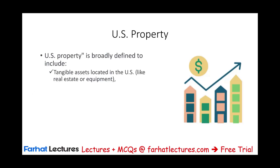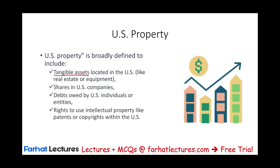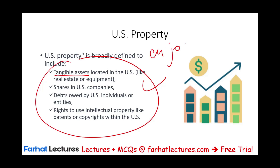What is U.S. property? U.S. property is defined as tangible assets — if you purchase real estate, an office building, equipment, shares in U.S. companies owned by U.S. individuals or entities, bonds, or rights to use intellectual property like a patent or copyright within the U.S. Simply put, you're using this money to enjoy something. When you use this money to enjoy it, it's as if it was given to you — the CFC is making the purchase, but you will be taxed on that.